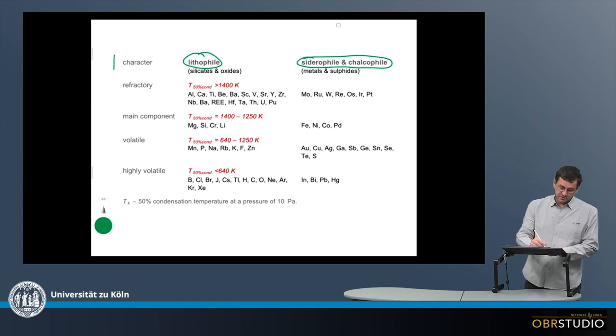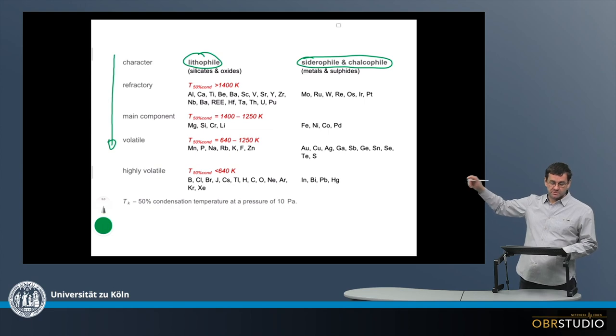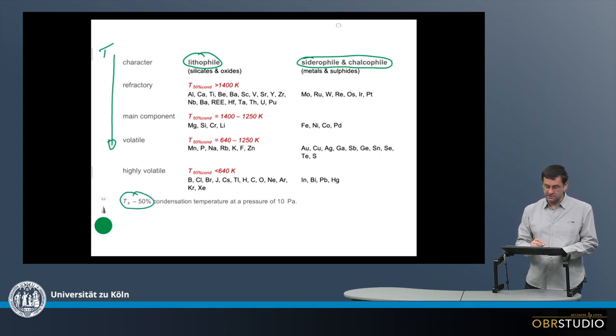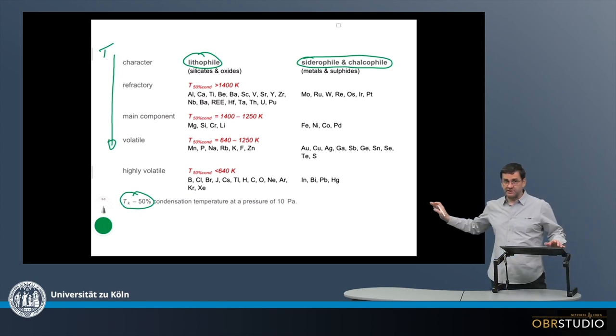Basically, here on something like the y-axis downwards, is something like the temperature. This is a particular temperature, and this is one very important concept in cosmochemistry. This is the 50% condensation temperature.